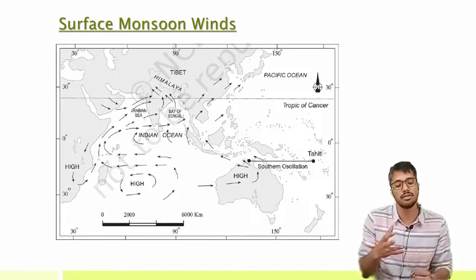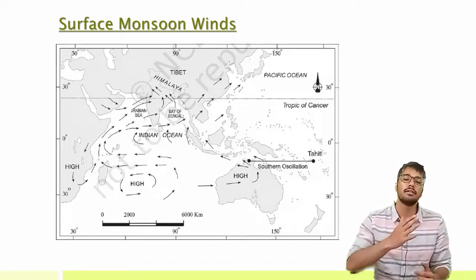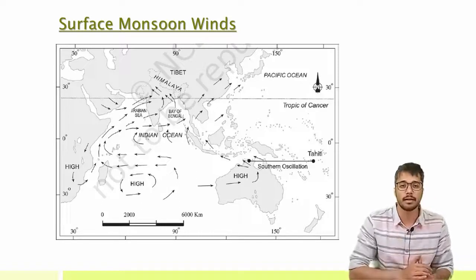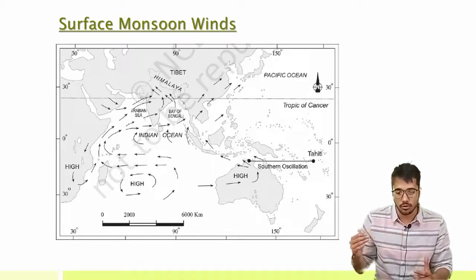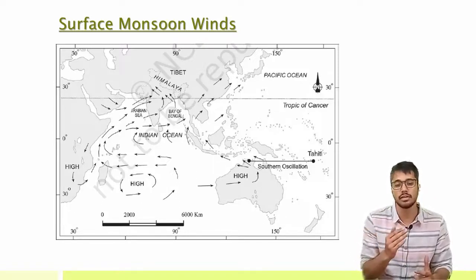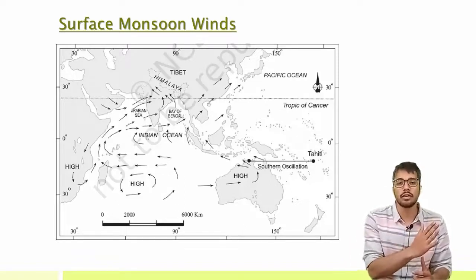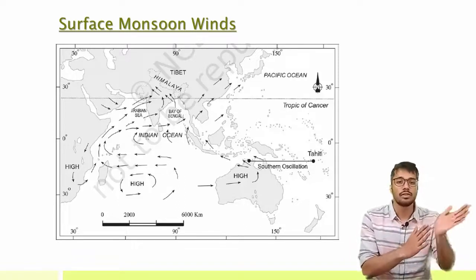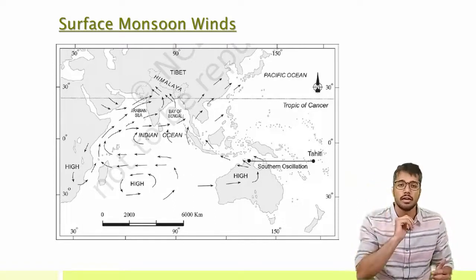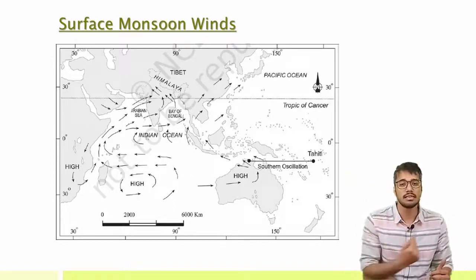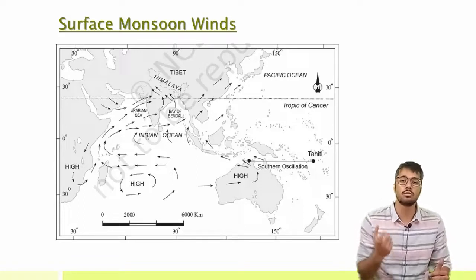The high pressure winds from the ocean travel towards India. As you can observe in the figure, the southeast trade winds were crossing the equator and moving in the southwest direction towards India. This is the seasonal reversal of winds — this is the monsoon.